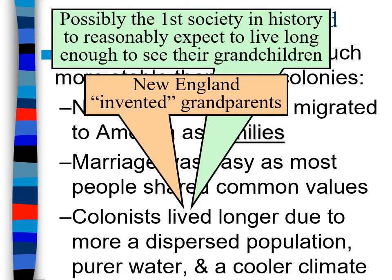People living longer is important, but think about what that could produce. In New England, some textbooks will say that New England invents grandparents. What they mean is people are living longer than anywhere else in the other colonies. You have your parents and grow up knowing your parents, but you never knew your parents' parents because life expectancy was not that long. In New England that begins to change, which is extremely revolutionary. It really became one of the first societies — not just in American history but in most of world history — to actually expect to live long enough to see their grandchildren. It's almost odd if you don't, eventually. So life expectancy really does increase, and this affects New England culture.